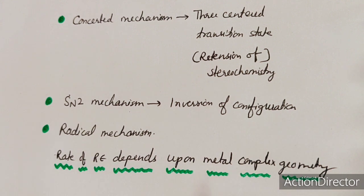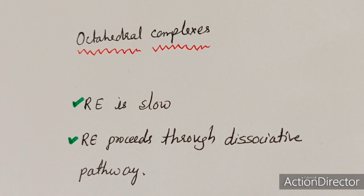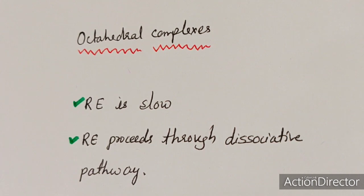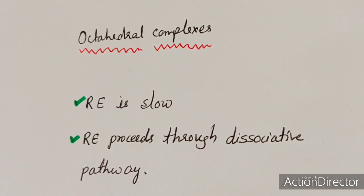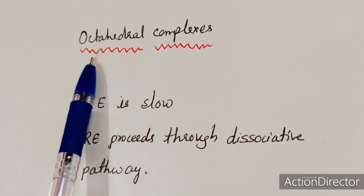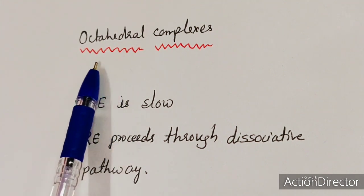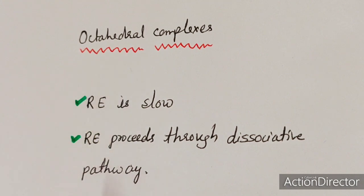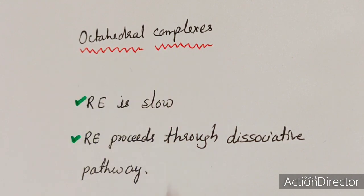We will discuss how reductive elimination takes place in octahedral complexes and in square planar complexes. As pointed out, the rate of reductive elimination depends upon metal complex geometry. In octahedral complexes, reductive elimination is generally slow and proceeds through a dissociative pathway.